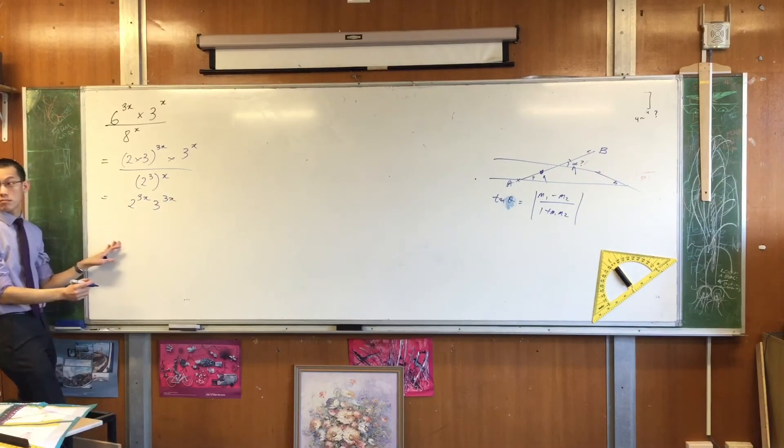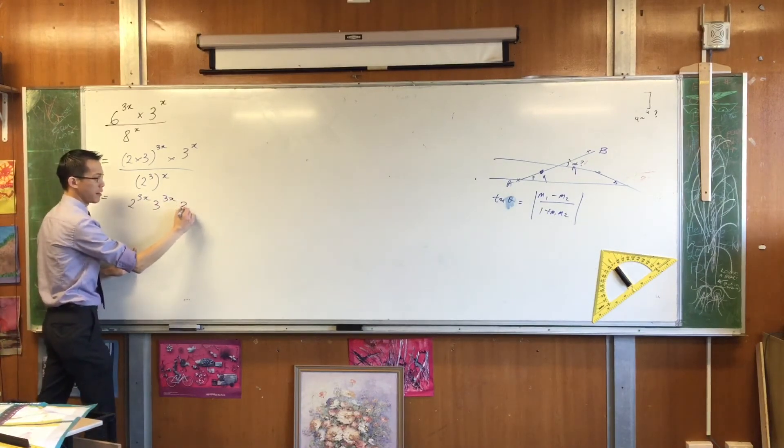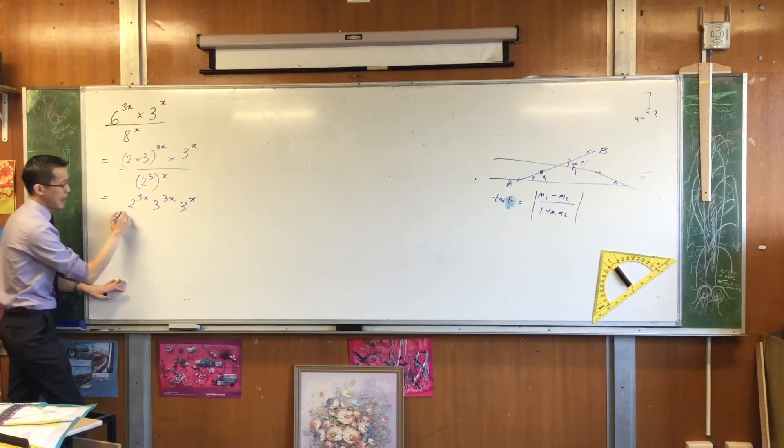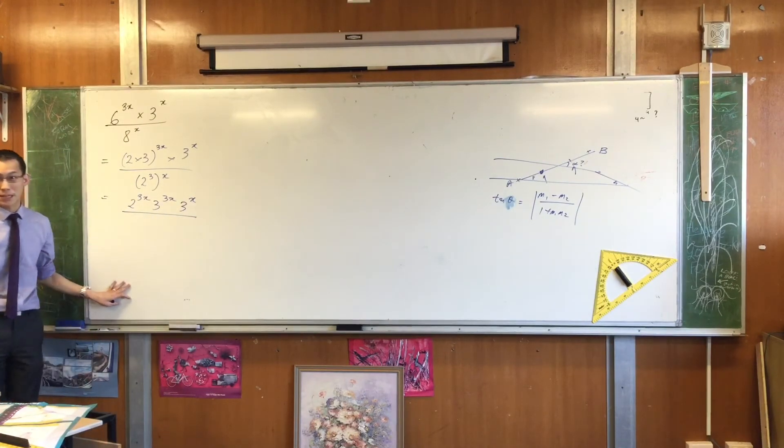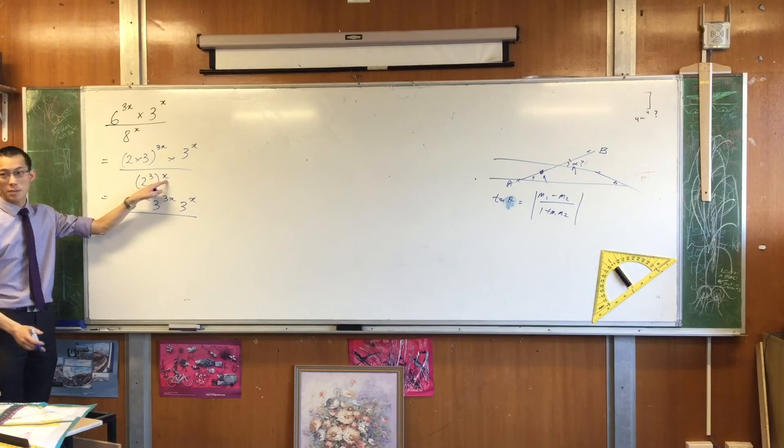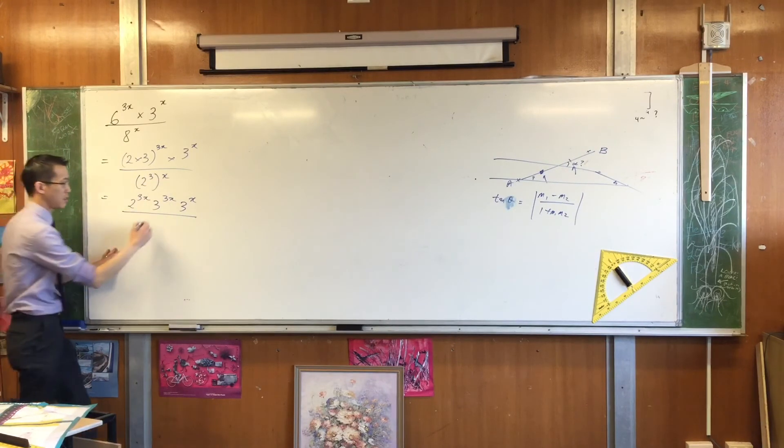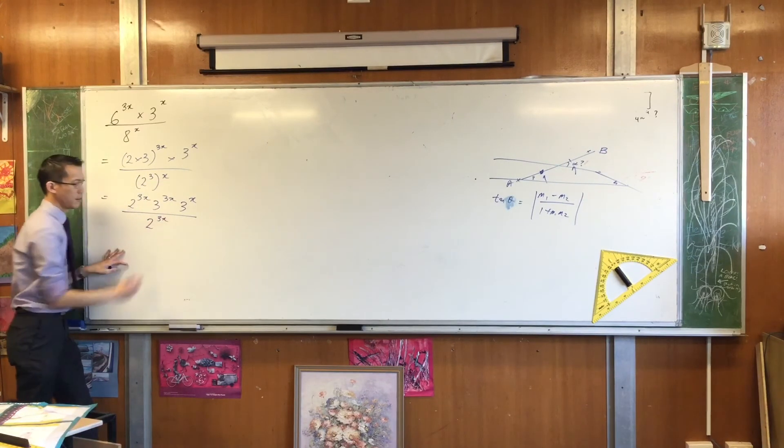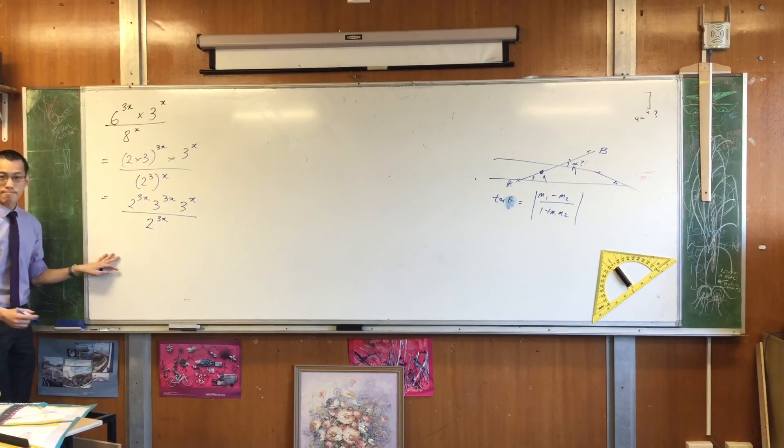Is that okay? Great. You've got a 3 to the x hanging out over here. And then down the bottom here, again, because of the index laws, these two counts here are going to be multiplied. So this is just 2 to the 3x. Okay? Now what?